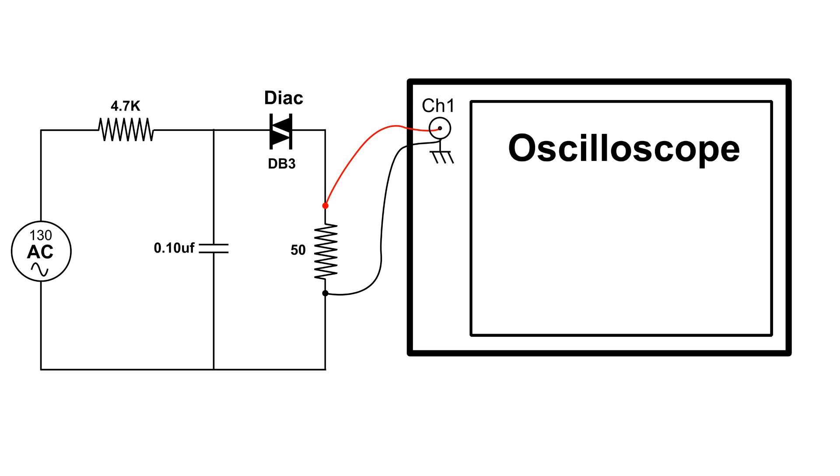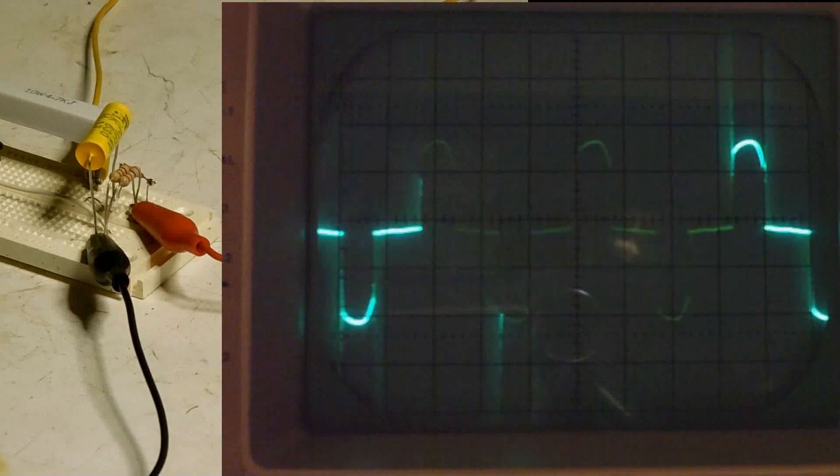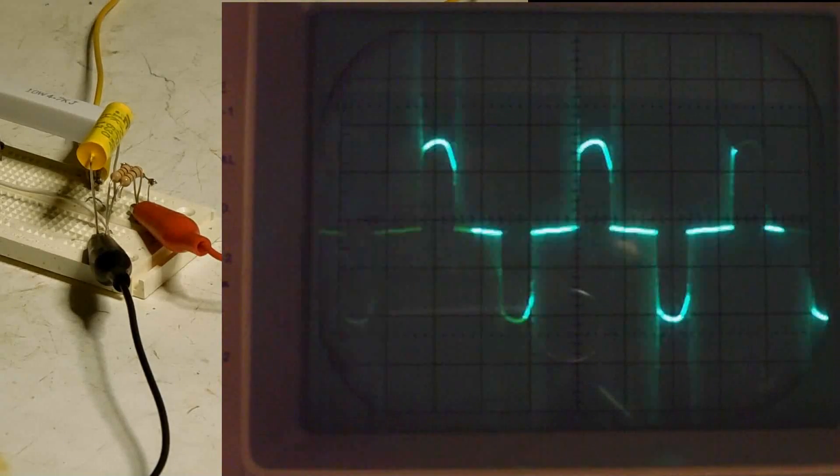I have hooked up the oscilloscope across the 50 ohm load, and this is what the trace looks like. This is the trace across that 50 ohm load.